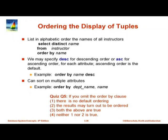In the relational model, tuples are not ordered, which gives the query optimizer freedom to choose any order for efficiency. However, when printing answers to users, there is often a need for sorted order. In SQL you can add an ORDER BY clause - for example 'ORDER BY name', 'ORDER BY name DESC', or 'ORDER BY department_name, name' so that when two people have the same department name, they are further sorted by name.